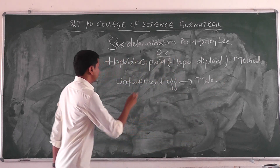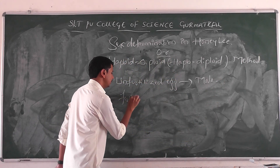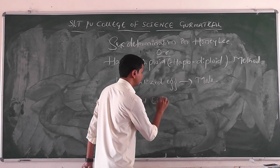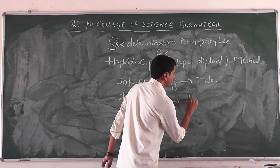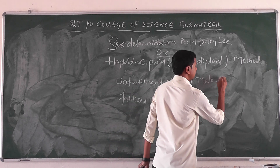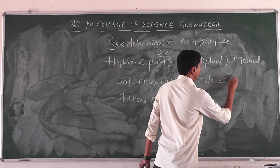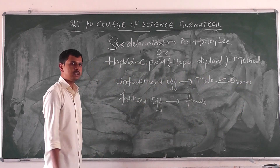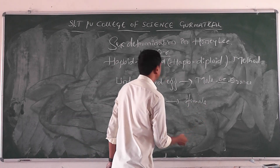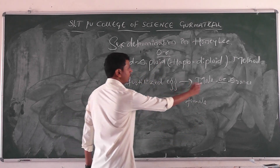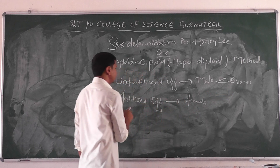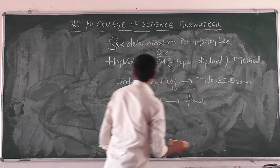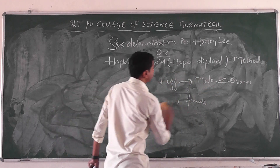A fertilized egg will become a female. In the honeybee, the male is also called a drone. So unfertilized egg will become a male or drone, and fertilized egg will become a female.